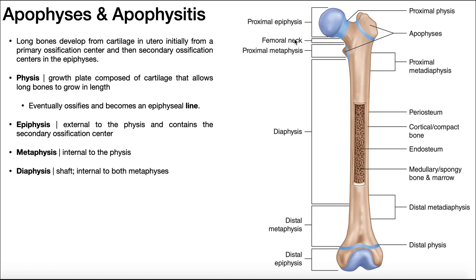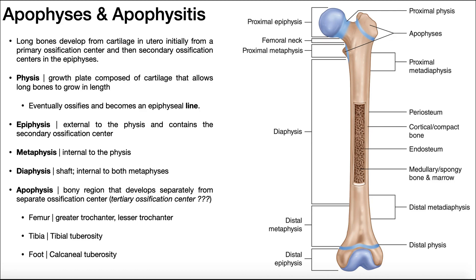Some long bones actually have additional secondary ossification centers, and they're contained in regions of the bone called apophyses — an individual one is called an apophysis. On the femur, we've got two apophyses pointed out, each with their own individual growth plates. Each one of these apophyses has its own separate secondary ossification center, distinct and separate from the two that are in the epiphyses at the ends of the long bones.